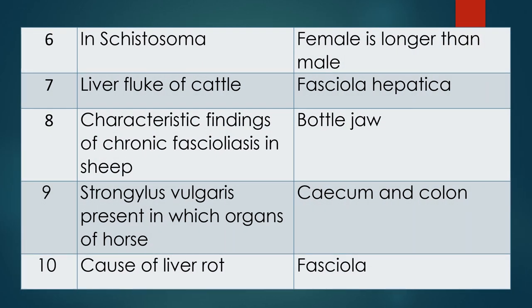Question six: In Schistosoma, generally the female is longer than the male. It can be asked in reverse also. Question seven: Name the liver fluke of cattle. Very common — Fasciola hepatica. But in India the most common hepatic fluke is Fasciola gigantica also.